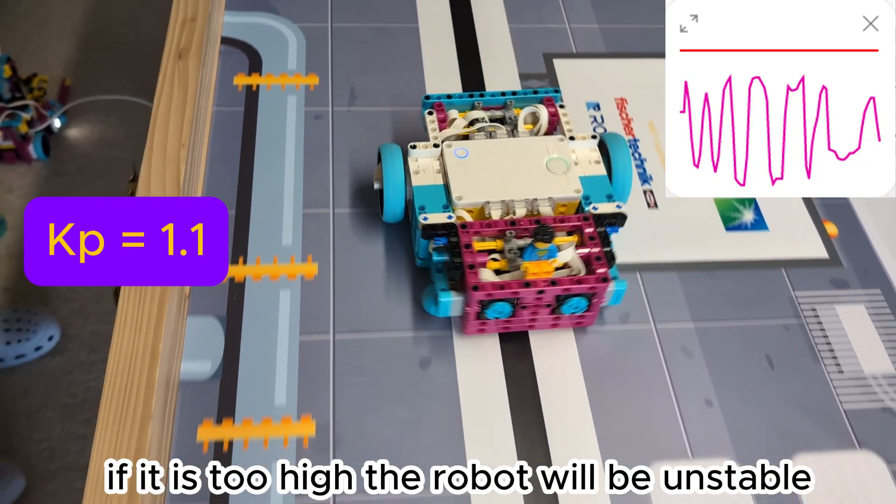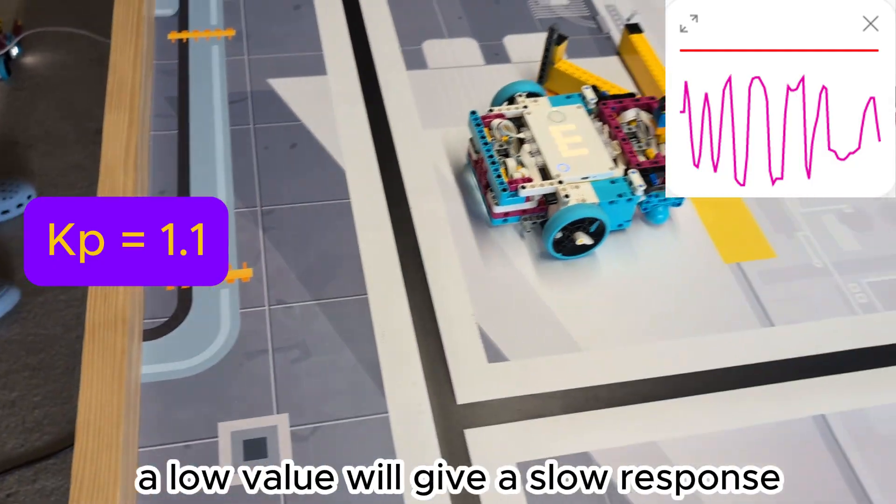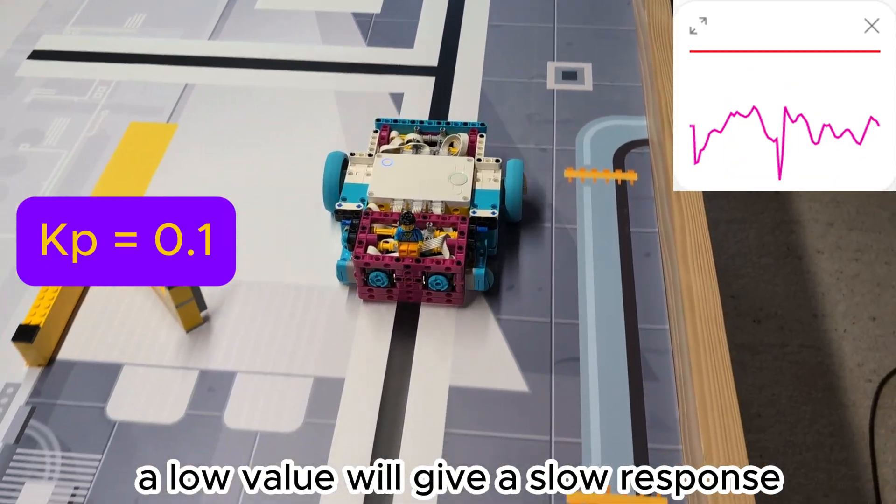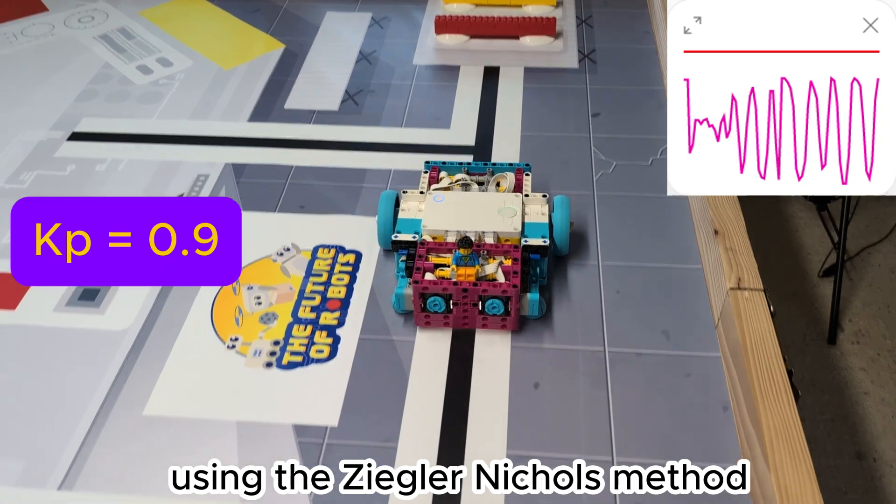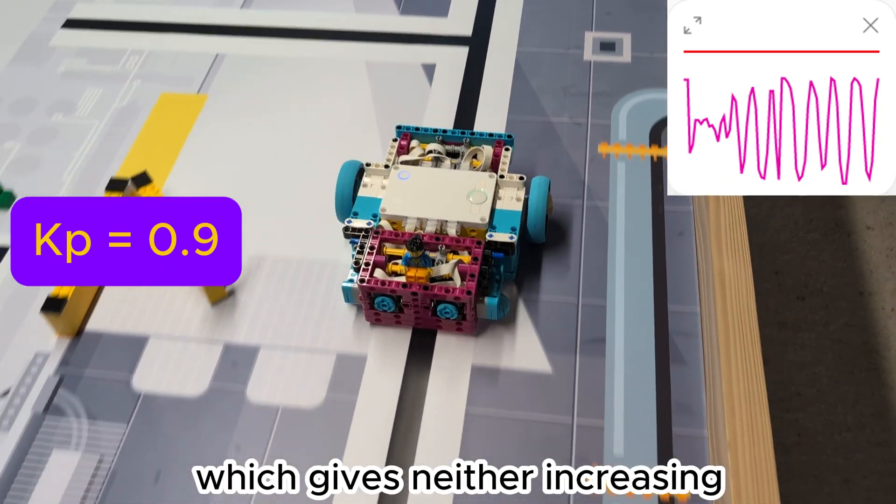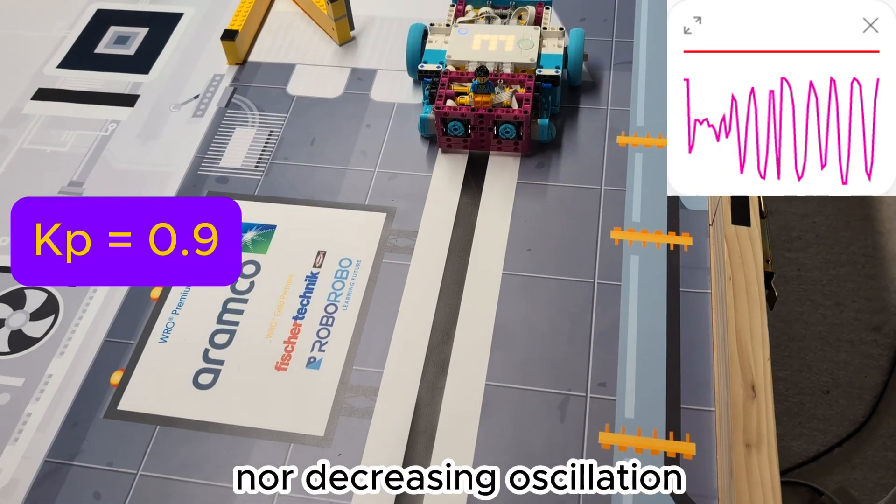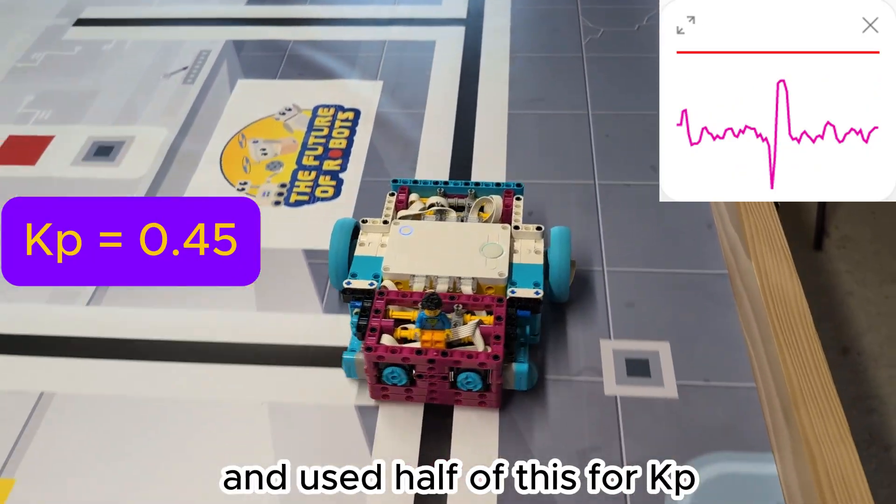If it is too high the robot will be unstable. A low value will give a slow response. Using the Ziegler-Nichols method we need to find the value which gives neither increasing nor decreasing oscillation and used half of this for KP.